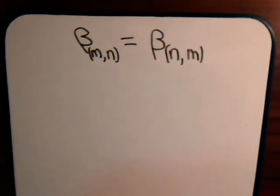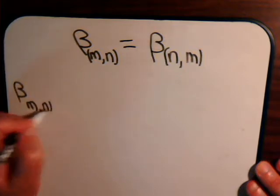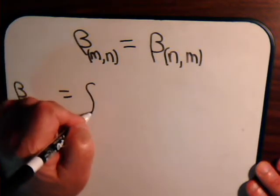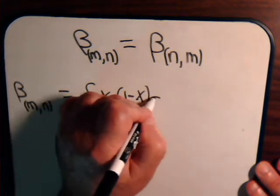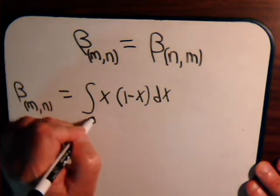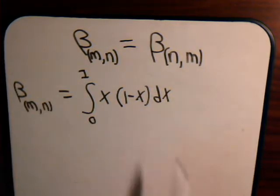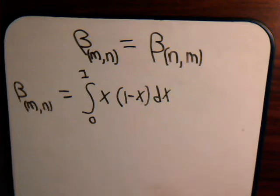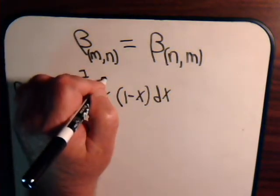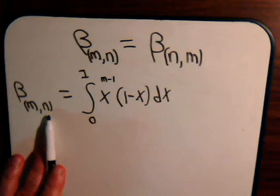To prove this, let's remember what our basic definition is. For beta(m,n), we have the integral from 0 to 1 of x times (1-x) dx. It's in this order: x(1-x) corresponds, the exponents on these terms correspond to these terms here specifically. The exponent on the x term is m minus 1, and for the (1-x) term, the exponent is n minus 1.